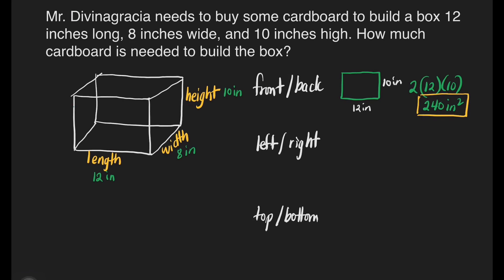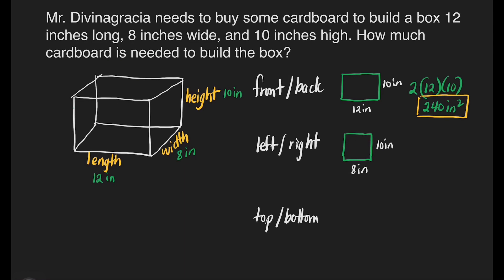For the left and right faces, we have the width of 8 inches and the height of 10 inches. That's going to be 8 inches times 10 inches times 2, because we have two faces. 8 times 10 is equal to 80, times 2 is 160 square inches. This is for our left and right faces.